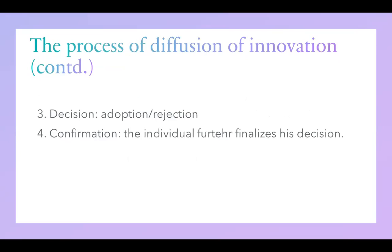Let's move to the next two steps. The third step is decision. This is the stage where the person actually determines the utility of the innovation, and he makes a decision based on his own observation or sometimes based on what he hears from his personal context. At this stage, he can either adopt the innovation or reject it — both adoption and rejection can happen here.